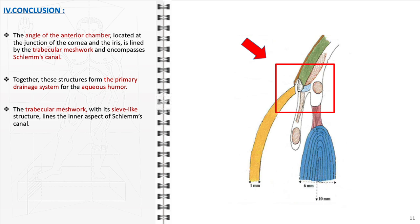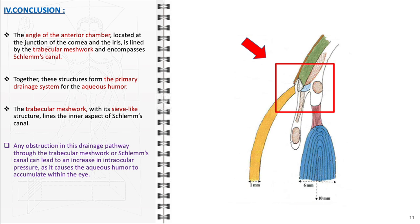Schlem's canal, a circular channel, encircles the iris and plays a pivotal role in the final stage of aqueous humor drainage. Once filtered through the trabecular meshwork, the fluid enters this canal and is eventually drained into the systemic blood circulation, essential for the continuous renewal of aqueous humor and keeping eye pressure within normal limits. However, any obstruction in the drainage pathway — either in the trabecular meshwork or in Schlem's canal — can lead to a buildup of aqueous humor, resulting in increased intraocular pressure, a condition known as ocular hypertension. If left unchecked, this can progress to glaucoma, which can lead to vision impairment or even blindness. Therefore, the integrity and functionality of the anterior chamber angle, the trabecular meshwork, and Schlem's canal are critical for ocular health and require regular monitoring, especially in individuals at risk of or suffering from glaucoma.